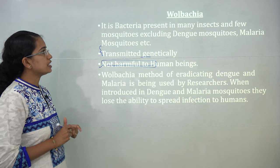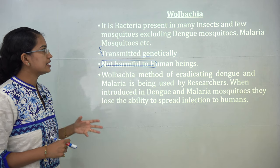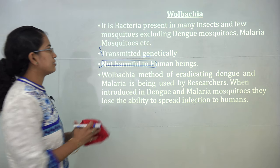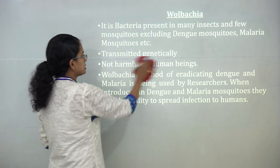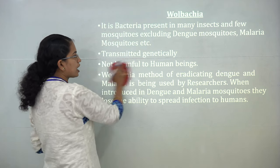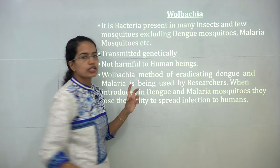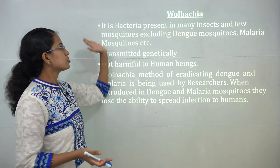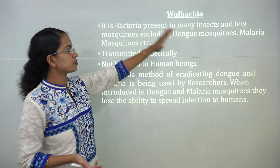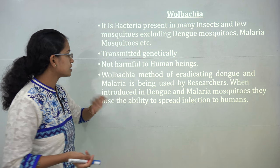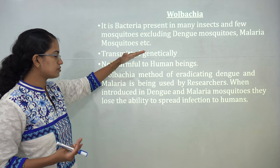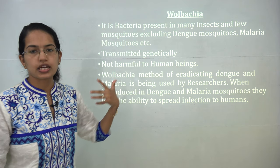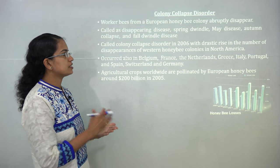Wolbachia is a bacteria present in various mosquitoes but not in dengue and malaria mosquitoes. These bacteria are transmitted genetically and are not harmful to humans. The Wolbachia method introduces this bacteria into dengue and malaria mosquitoes, causing them to lose the ability to spread infection.